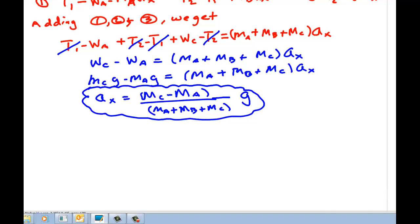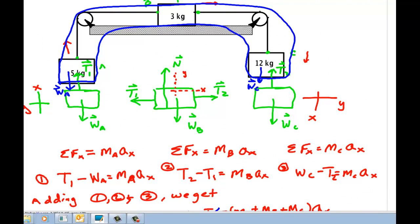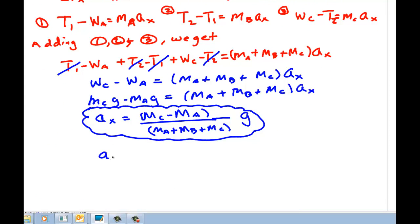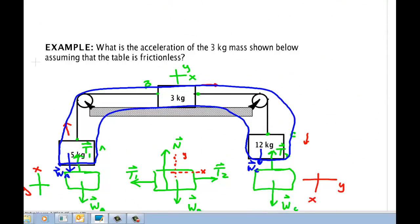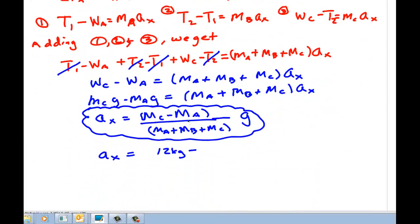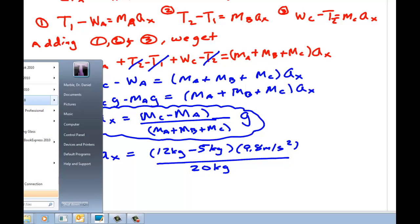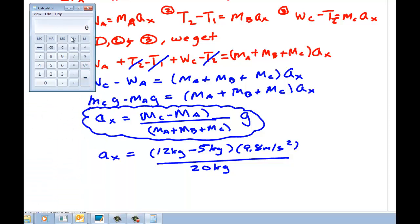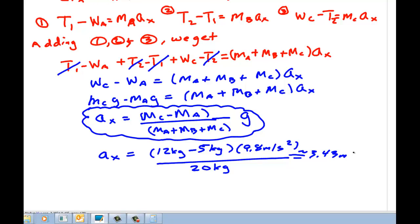Let's go ahead and put some numbers in here. I see 15, 20 kilograms total mass. So a_X is 12 kilograms minus 5 kilograms times 9.8 meters per second squared divided by 20 kilograms. So we have to bring up our little calculator. So 7 times 9.8 divided by 20. 3.43 meters per second squared.